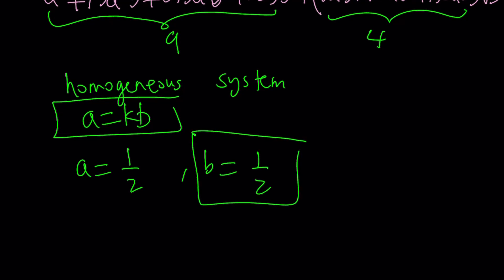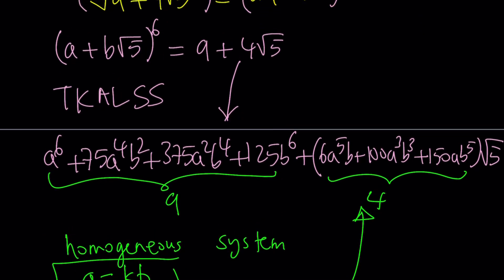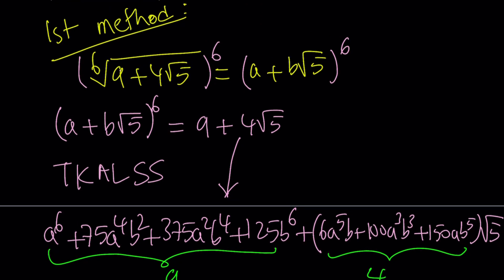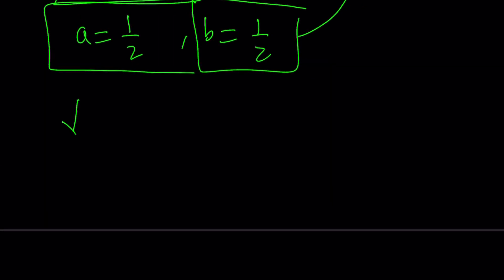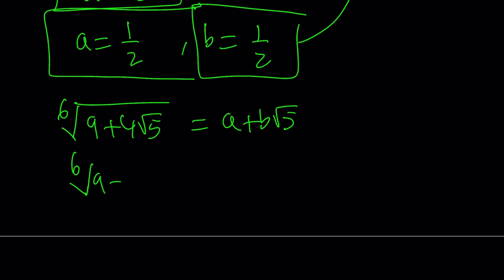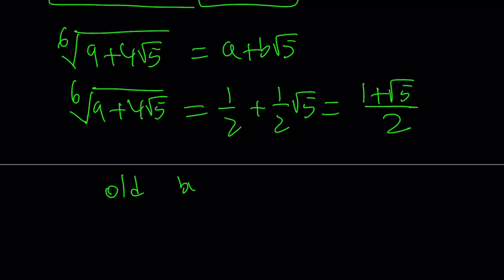You can just go ahead and substitute those values and easily verify that they work. So what is that supposed to mean? Our initial assumption was that the sixth root of 9 plus 4 root 5 is going to equal a plus b root 5, and we found that a and b are both 1 half. Therefore, the expression we're trying to simplify is equal to 1 half plus 1 half root 5, which can also be written as 1 plus root 5 divided by 2.